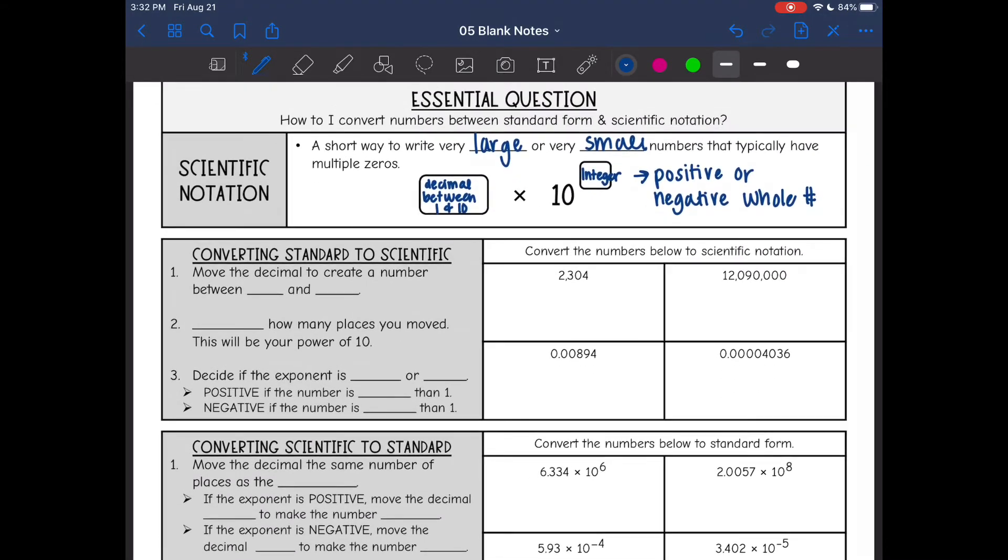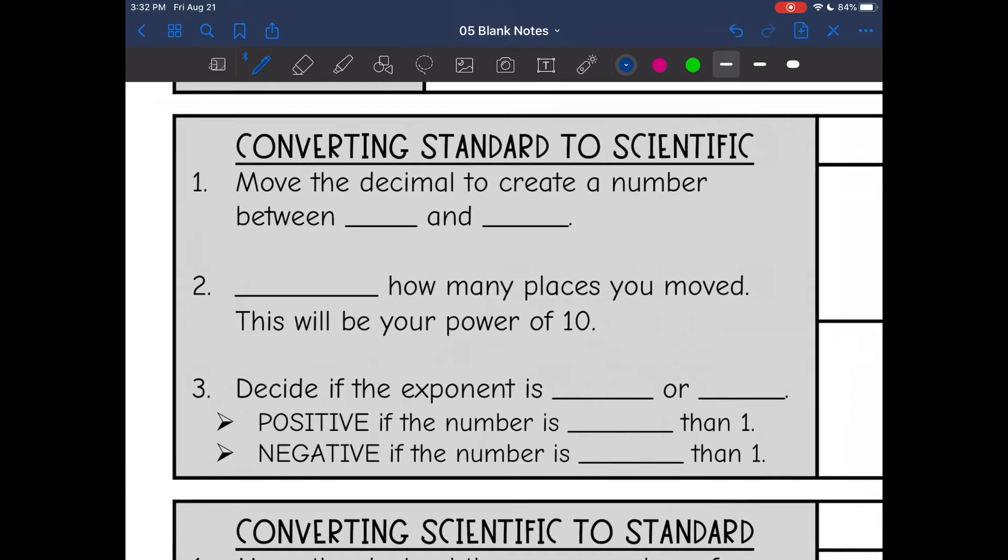Okay, so first thing we are going to learn is how to convert from standard to scientific. So the first thing you want to do is get this decimal that's between one and 10. And the way you're going to do that is by moving the current decimal point to create a number between one and 10. And then you will count how many places you moved, and this will be your power of 10. So then we need to decide if the exponent is positive or negative.